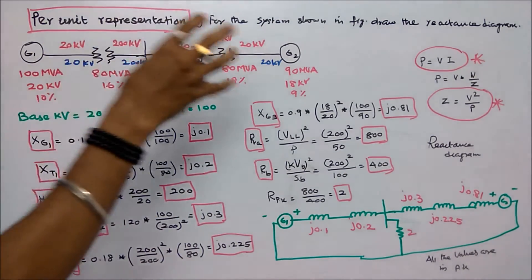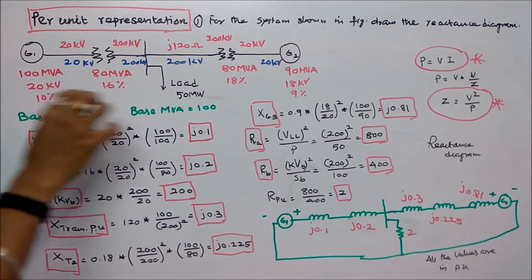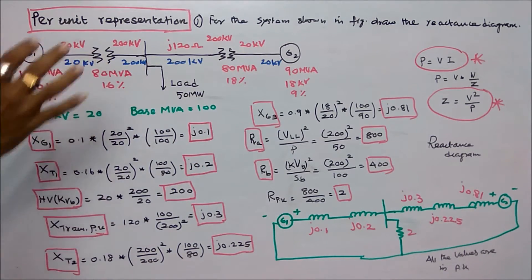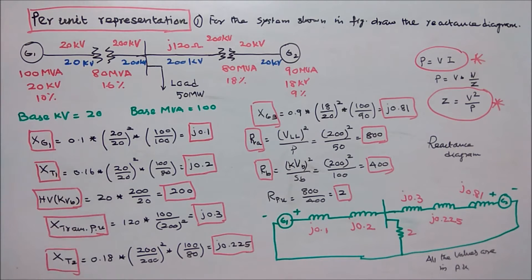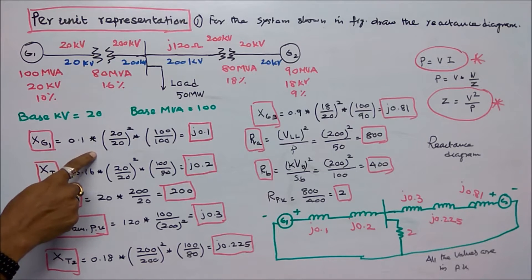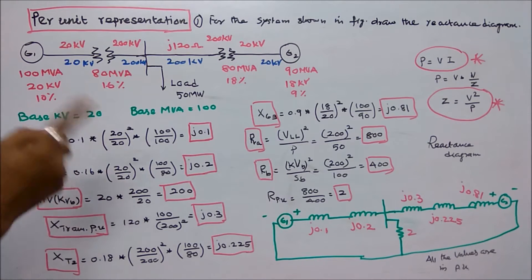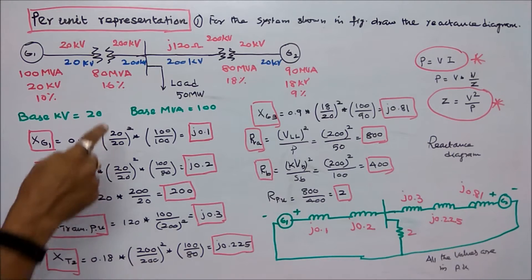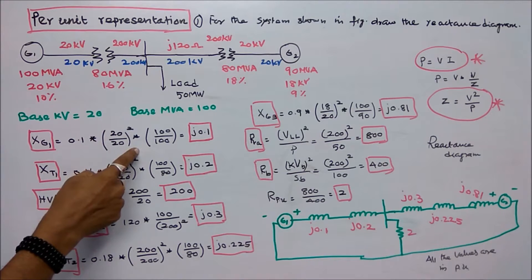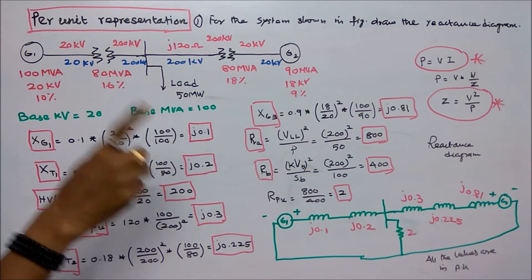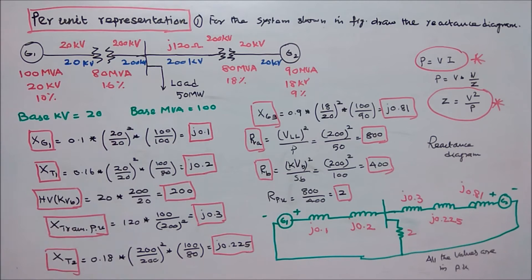Given values are shown in red color and chosen values in green color. First, I find the per-unit reactance of the generator. The given reactance value is 0.1, multiplied by (Vb1/Vb2)² × (Sb2/Sb1) = (20/20)² × (100/100), which equals j0.1.